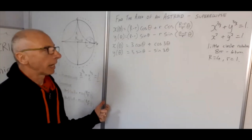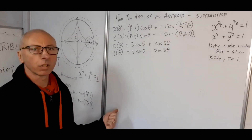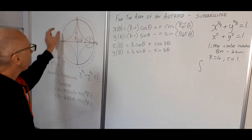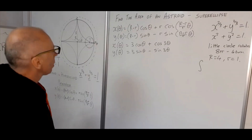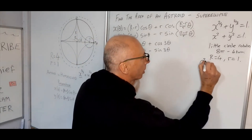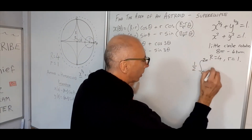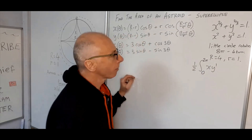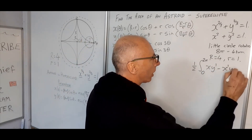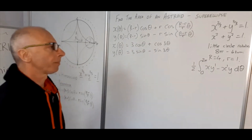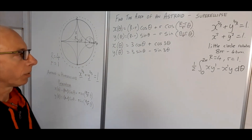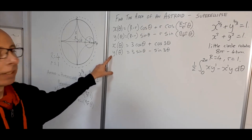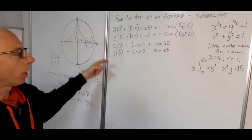Now we're ready to look at our integration formula. If we integrate around one full rotation anti-clockwise, that's from 0 to 2π: Area = ½ ∫₀²π (x·y′ − x′·y) dθ. We have our x and y, so now we need to find x′ and y′.